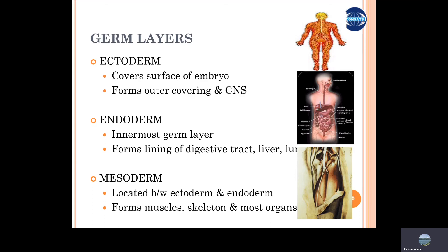Cell specialization also involves the production of germ layers. Early animals had only two germ layers — ectoderm and endoderm — making them diploblastic animals. With evolution, a third layer, the mesoderm, was introduced, making these animals triploblastic. With the development of mesoderm, another characteristic evolved: the presence of a body cavity called the coelom. The significance of these features will be discussed in the upcoming slides.